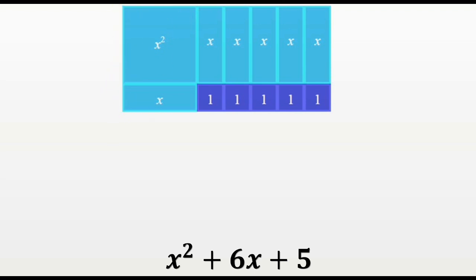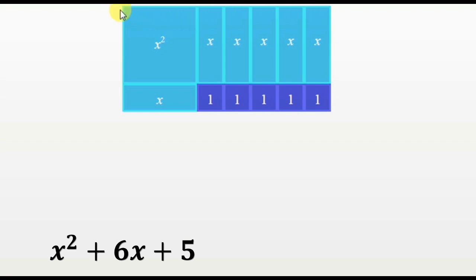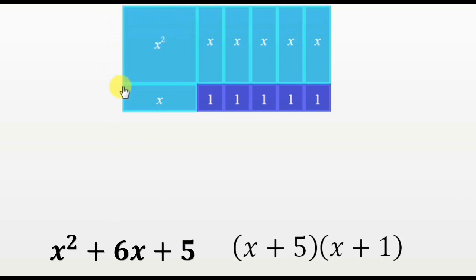You can see that we have arranged the tile pieces in a rectangular form. That means we have factorized our polynomial and we can look at the sides of the rectangle to find its factors. This side is x, and then 1, 2, 3, 4, 5 — so this is x plus 5, and this side is x plus 1. So the factors of the polynomial are (x plus 5) times (x plus 1). This is fun now — you are not dealing with numbers but actually solving puzzles! So why not try some more examples?